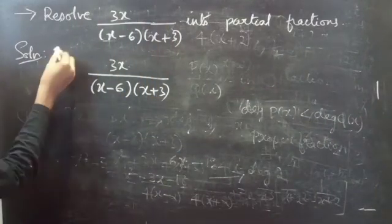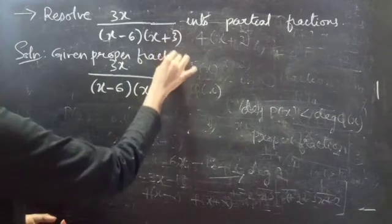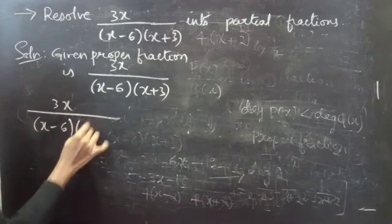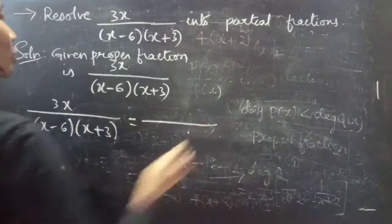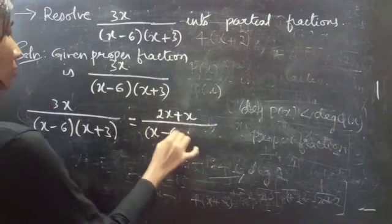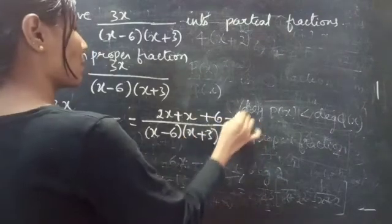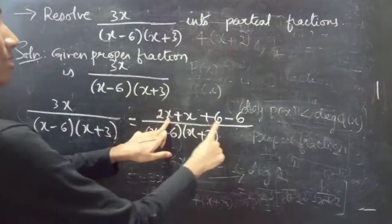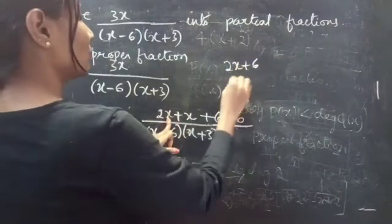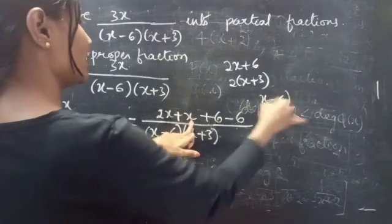So the given proper fraction is 3x by (x minus 6)(x plus 3). We can write the numerator 3x as 2x plus x. Then include plus 6 and minus 6 in the numerator. If you take 2 common from 2x and 6 you get 2 into (x plus 3). Likewise, taking x and minus 6 gives (x minus 6).